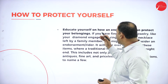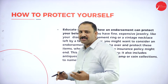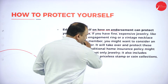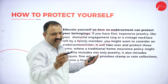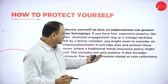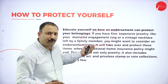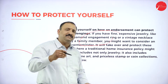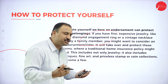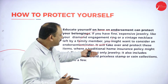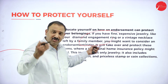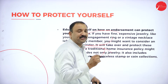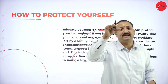Moving further — educate yourself on how the endorsement works towards your belongings. For example, if you have fine jewelry or a vintage necklace that you want to protect, you might consider an endorsement for it. People think that home insurance itself will cover that, but it might not cover the jewelry. So you need to know that you want an insurance cover exclusive for that necklace.